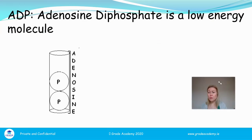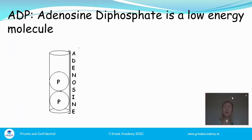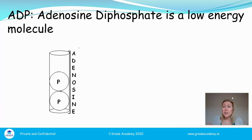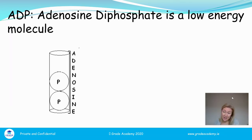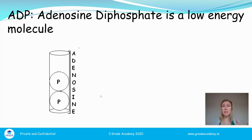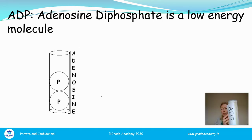The first energy carrier is ADP — adenosine diphosphate. It's described as a low energy molecule, and it's present in the cytoplasm waiting to be triggered to get involved in a reaction. What makes ADP important is that it can gain energy and bond to a third phosphate. I've drawn this like a tennis ball container — it's got ADP written on the side.